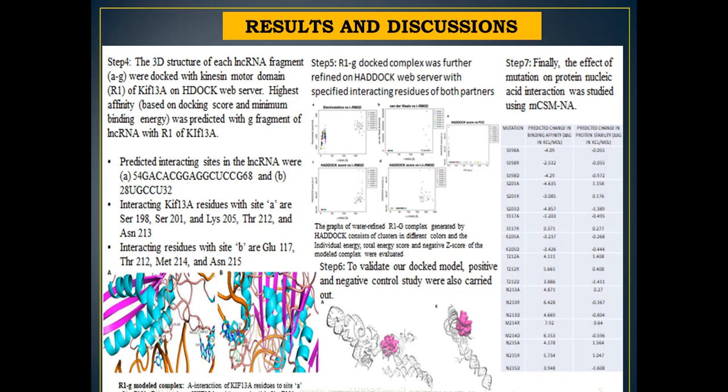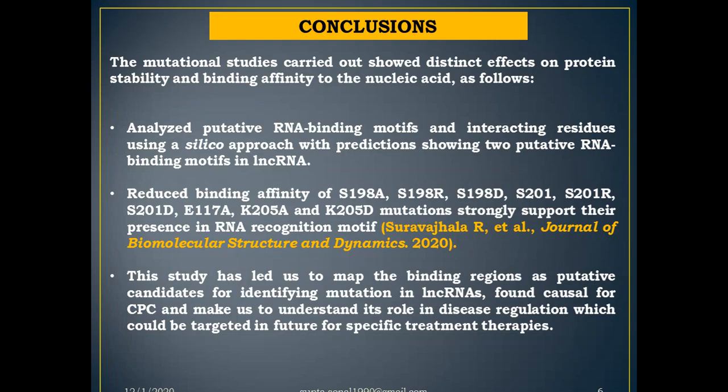Finally, the effect of mutation on protein–nucleic acid interaction was studied using the MCSM-NA tool. The conclusions inferred from the present study are as follows: the mutation studies carried out showed distinct effects on protein stability and binding affinity to the nucleic acid. This study has led us to map the binding regions as putative candidates for identifying mutations in LNC RNAs which were found causal for CPC, and helps us understand their role in disease regulation, which could be further targeted for specific treatment therapies.